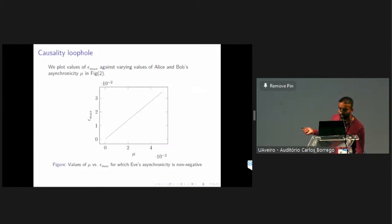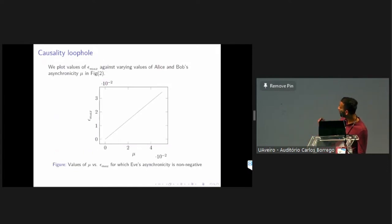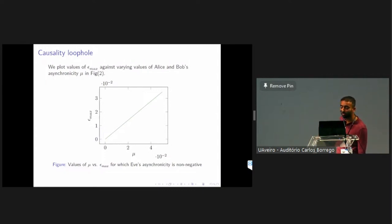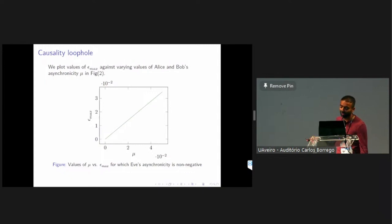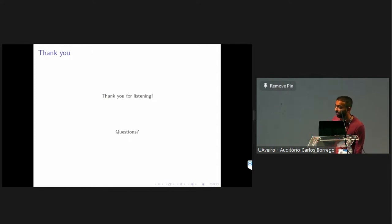A plot shows how much Eve's uncertainty can grow before there is no cheating strategy. If you tolerate no asynchronicity, Eve must have perfect information — she must know exactly what Alice and Bob's inputs are. But if you tolerate a little more asynchronicity, something like 4.5%, Eve still needs close to perfect knowledge — around 96.5% certainty about Alice and Bob's inputs. That brings me to the end of my talk; I'll take any questions.